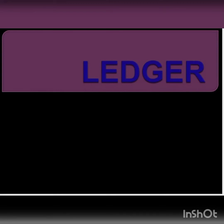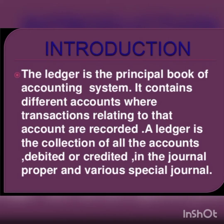Welcome to the accountancy class. Today in this module we are going to learn about the term ledger. The business transactions of financial character are recorded in the books of original records. These books are cash book, purchase book, sales book, purchase return book, sales return book, bills receivable book, bills payable book, and journal.